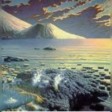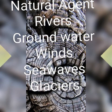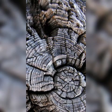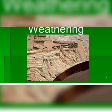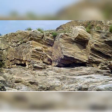Weathering that takes place due to the chemical reaction of the rocks is called chemical weathering. Here, oxidation, carbonation, solution and hydration take place. Oxidation is the process similar to the rusting of iron — the presence of air and water is known as oxidation.